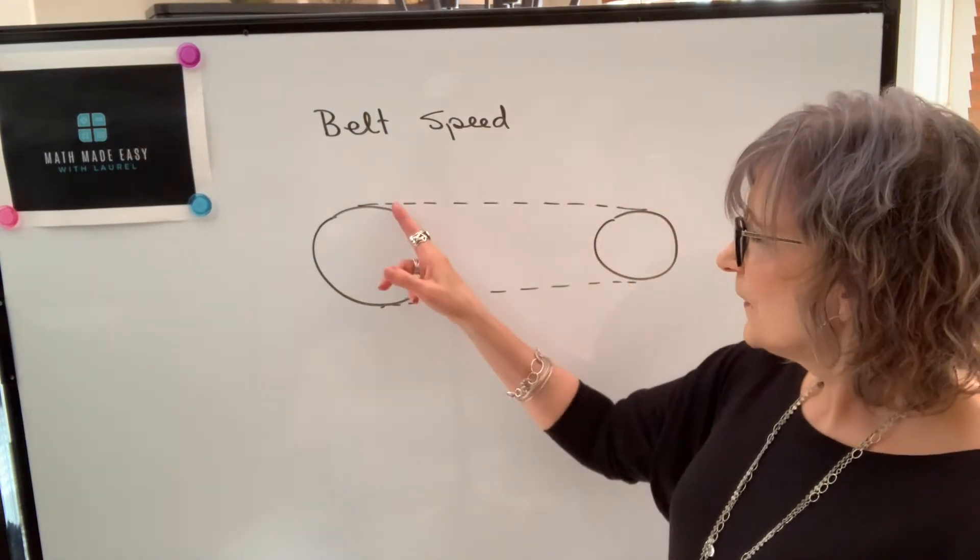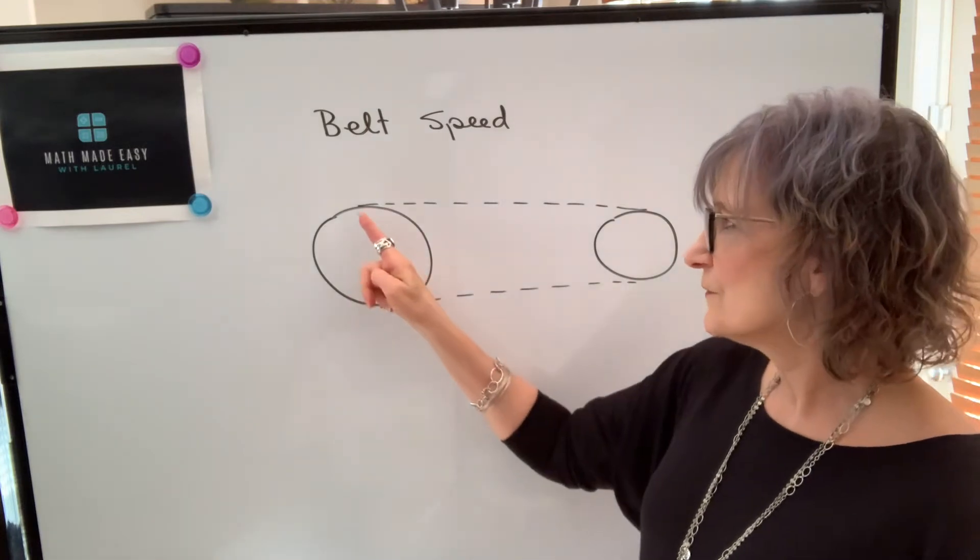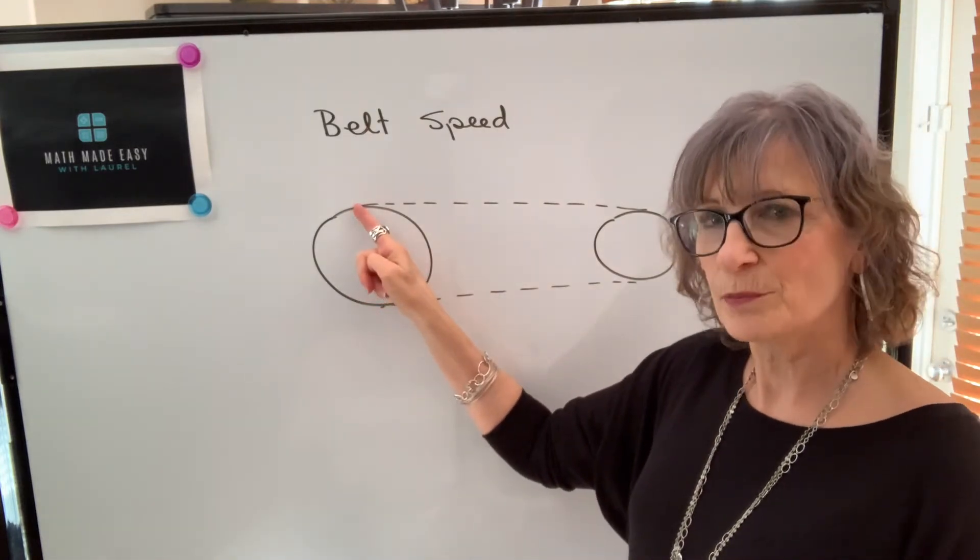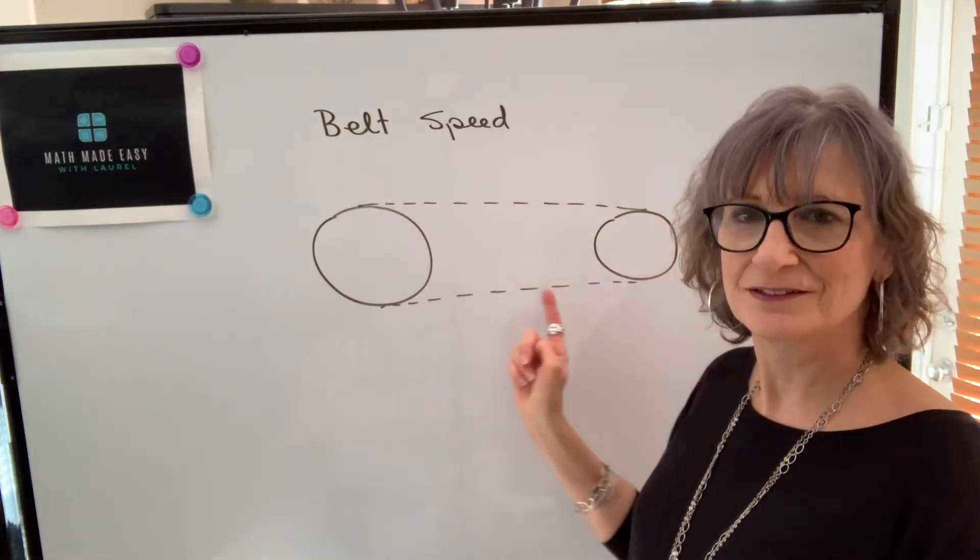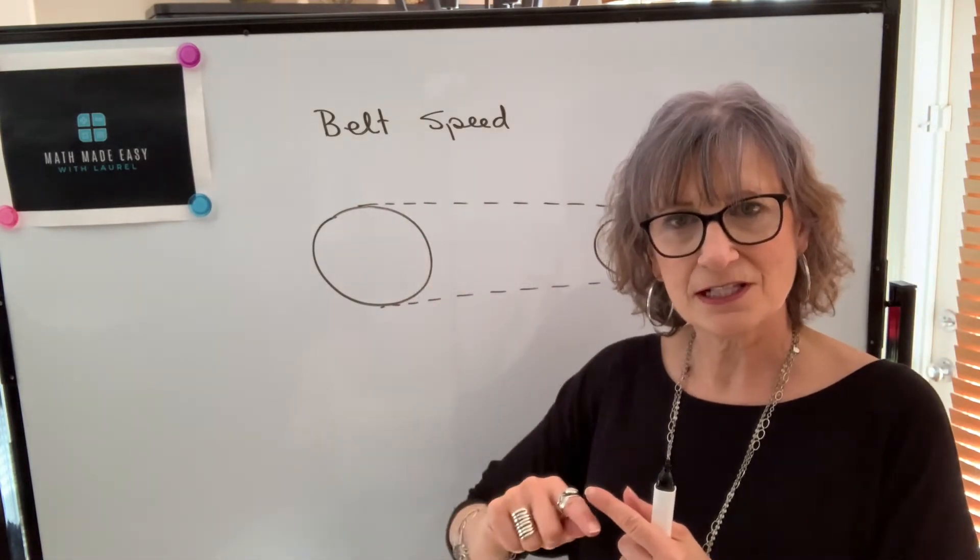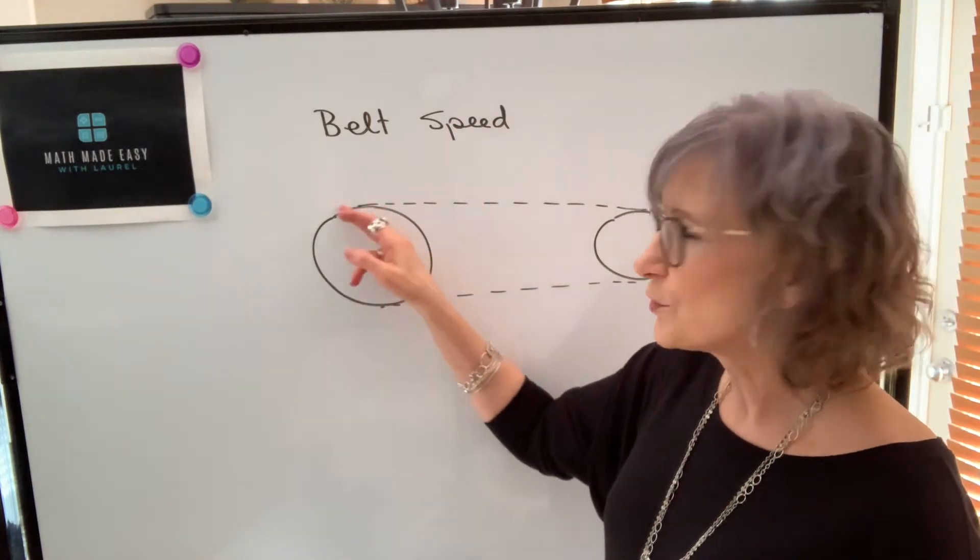And to find that, what we're going to do is find the surface speed on one of the pulleys. The surface speed of each pulley will be the same as the belt speed. The belt is moving at a constant rate. So whatever that rate is, it's going to be the same along each pulley.